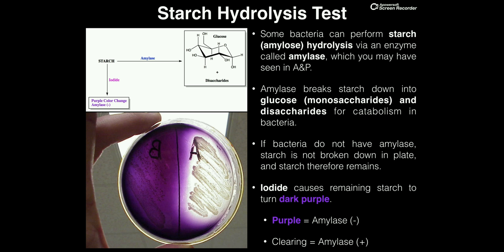Over here on the right side, we see there's a clearing — mainly in the center of the right side of the dish — where there's no purple color. That's because the A bacteria did produce amylase, and so they cleared this whole area of starch. They metabolized it and broke it down to glucose and disaccharides. There's no starch here because they produce this enzyme. Therefore, if you see a significant clearing on any side of the petri dish, that means they do produce amylase and would be amylase positive.